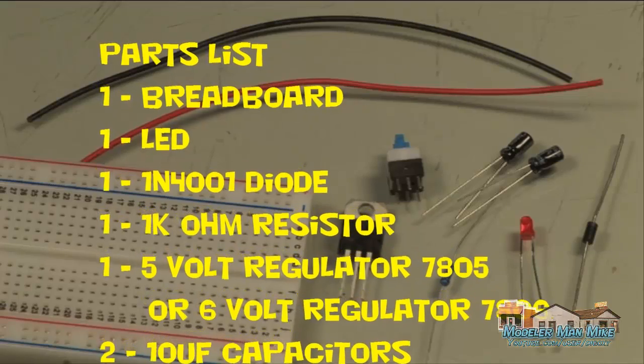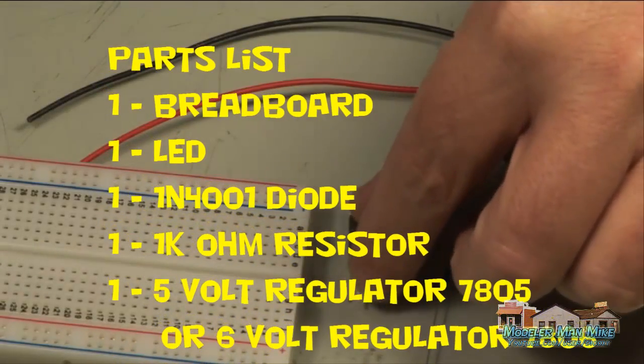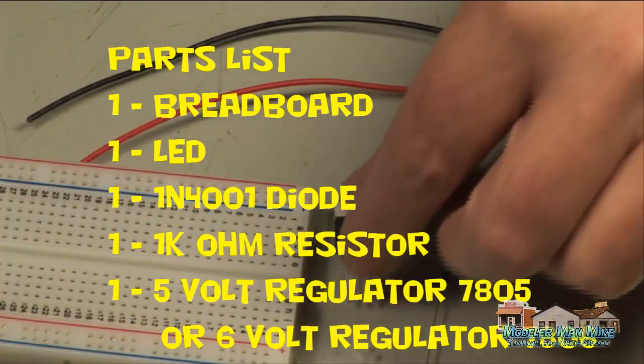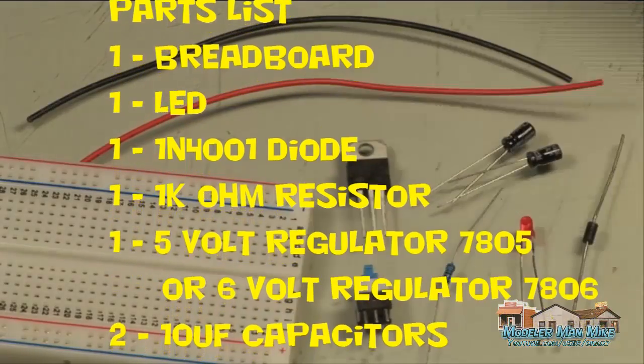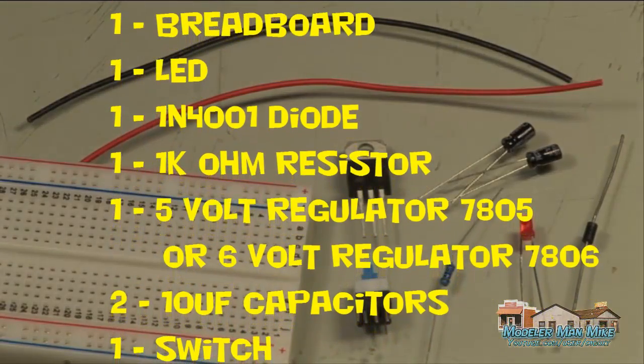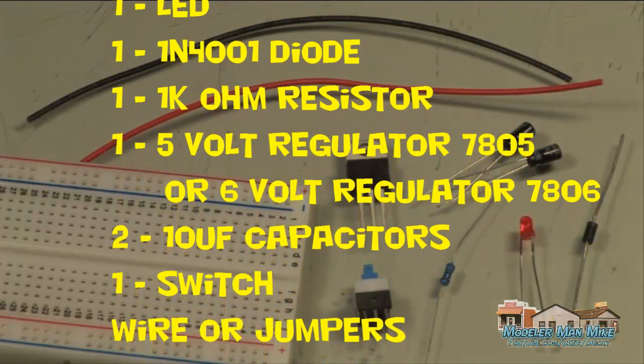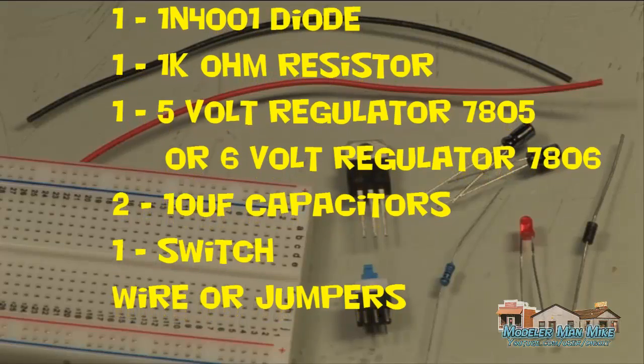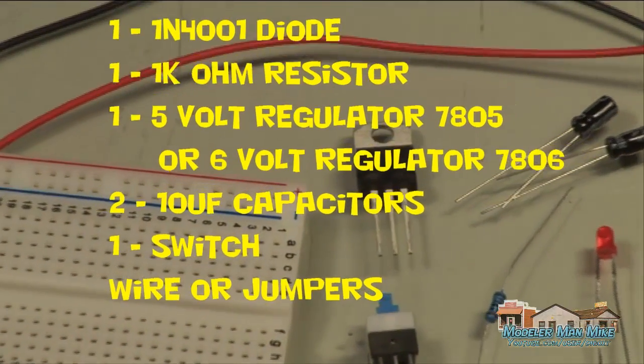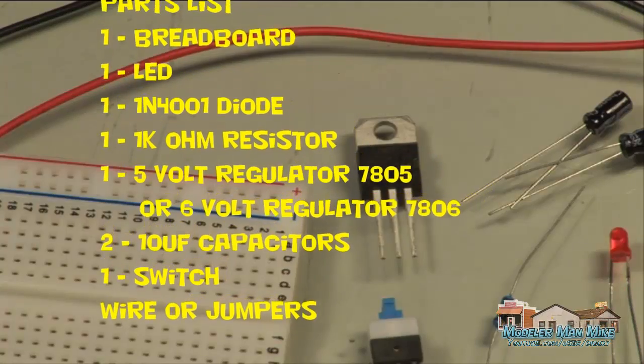You'll need an LED, a 1N4001 diode, 1k ohm resistor, 5 volt regulator 7805 or 7806, you can use either one with this, 10 microfarad capacitors, two of those, a switch, and some wires and jumpers.